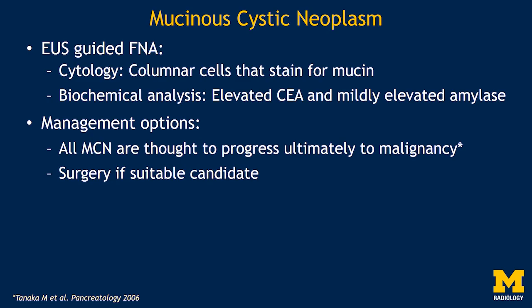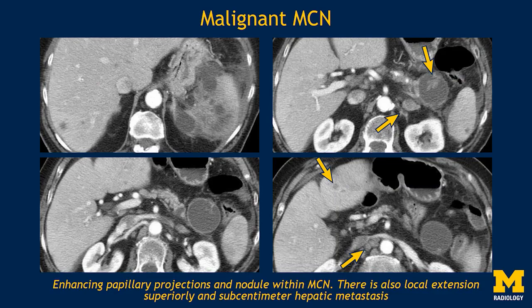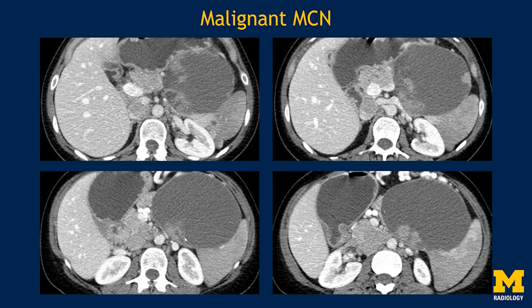All mucinous cystic neoplasms are thought to progress ultimately to malignancy and surgery is offered if the patient is a suitable candidate. An example of malignant change within a mucinous cystic neoplasm shows a large cystic lesion in the tail of the pancreas with nodular enhancing components along the wall, enhancing lymph nodes in the retroperitoneum, and hepatic metastasis. Another example shows a large cystic lesion with solid nodular enhancing components; the patient underwent a distal pancreatectomy confirming malignant change within a mucinous cystic neoplasm.